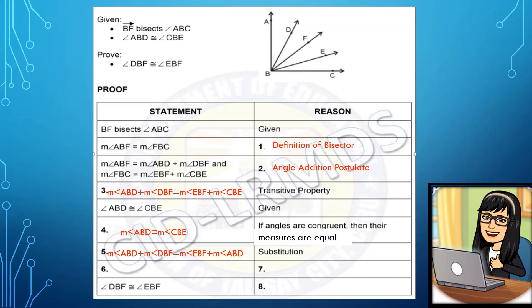Since measure angle ABD appears on both sides and they are the same, we can eliminate them. That gives us: measure angle DBF is equal to measure angle EBF — reason: subtraction property of equality, since we eliminated the same measure from both sides. Now since the two angles have equal measure, we can conclude that angle DBF is congruent to angle EBF — reason: definition of congruent angles.